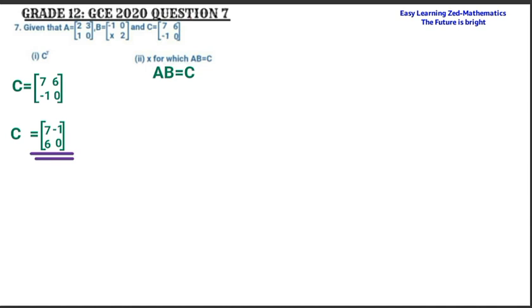The expression that will help us get the correct answer is: when we multiply matrix A by matrix B we get matrix C. So I'm going to write the matrices without their letter names. Matrix A is 2, 3, 1, 0 multiplied by matrix B which is negative 1, 0, X, 2, and this should give us matrix C which is 7, 6, negative 1, 0.